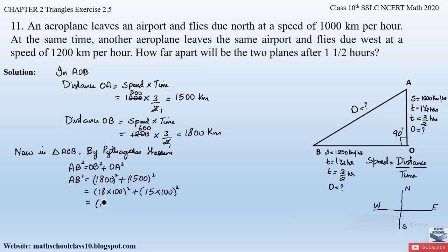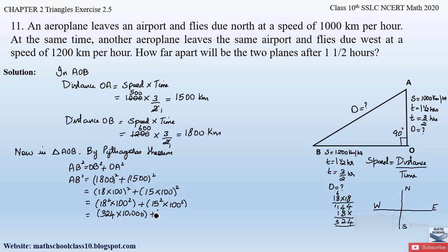Opening the brackets: AB² = 18² × 100² + 15² × 100². Now 18² — calculating 18 × 18 — gives 324. And 100² is 10,000. So we have 324 × 10,000. For 15²: calculating 15 × 15 gives 225. And 100² is again 10,000. So we have 225 × 10,000.